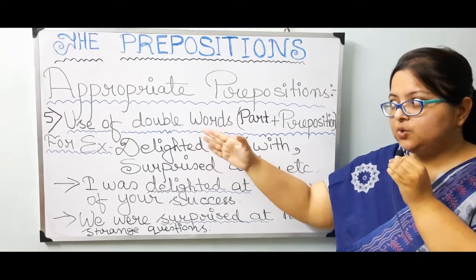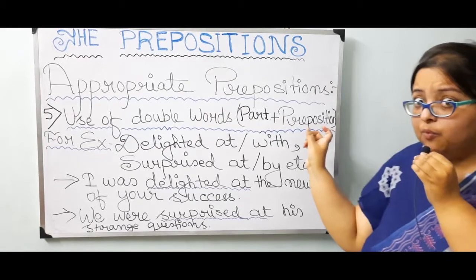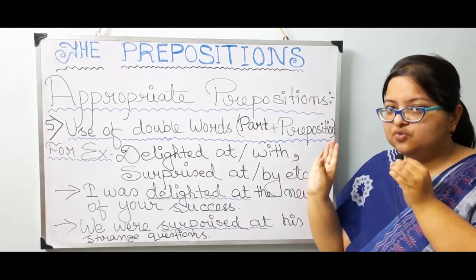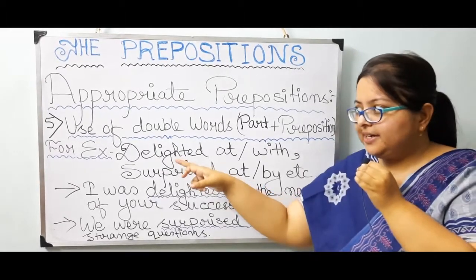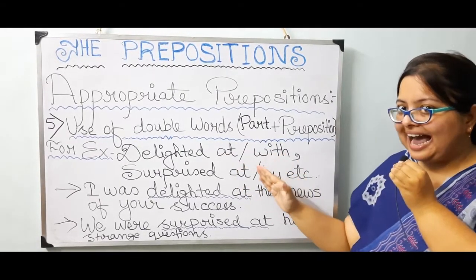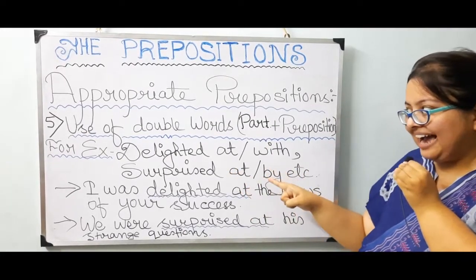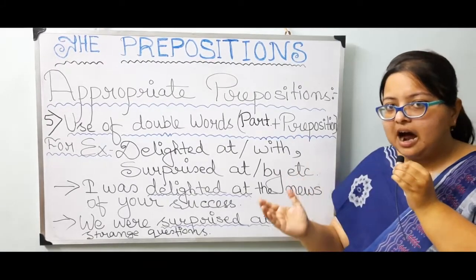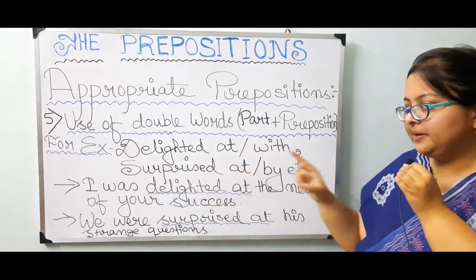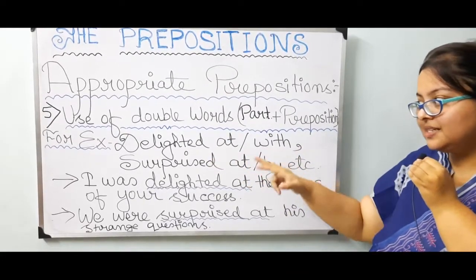Again, focus on the use of double words. Number 5: participle plus preposition. A word of past participle and a word of preposition will combine together to form an appropriate preposition. For example: delighted at or with — with 'delighted', we can use either 'at' or 'with' according to the need of the sentence. Next: surprised at or by, etc.